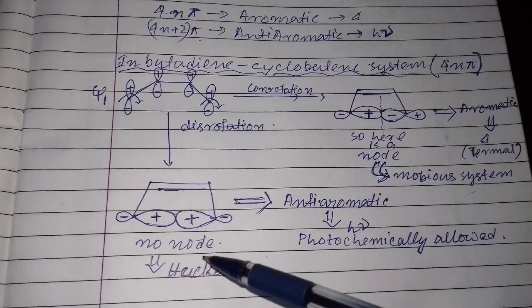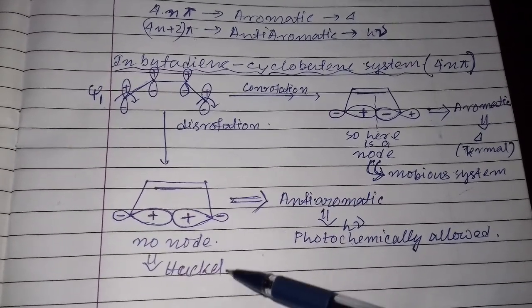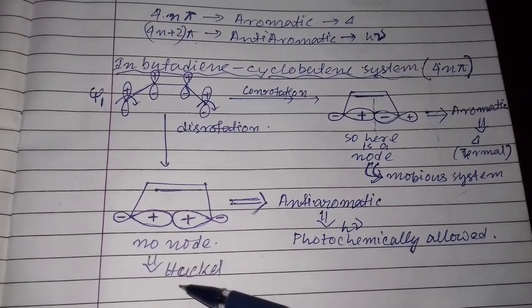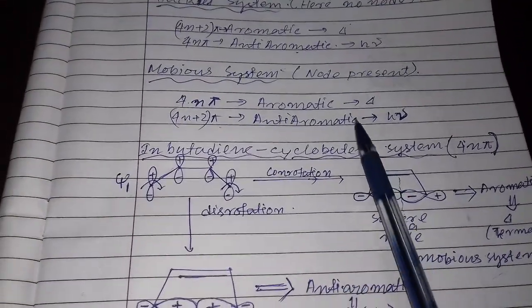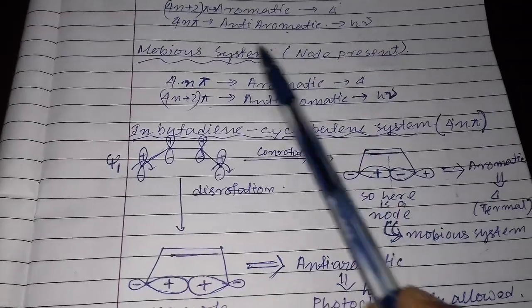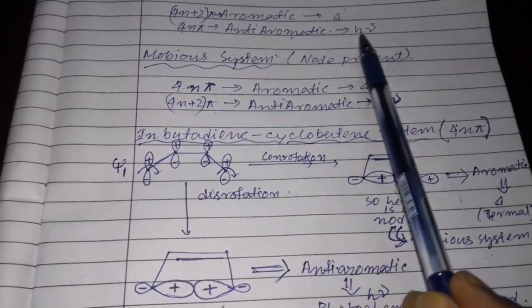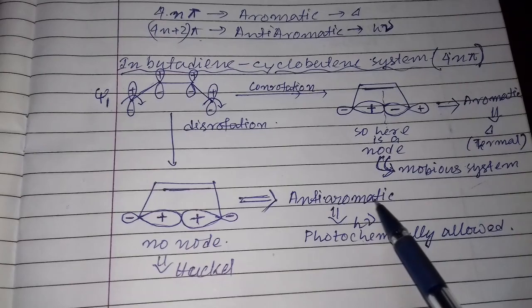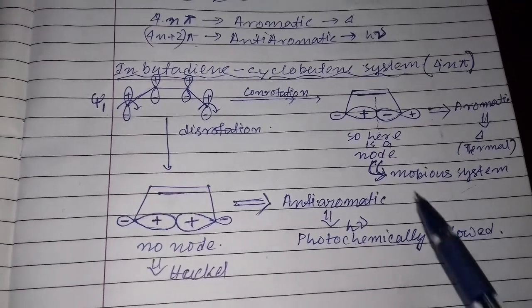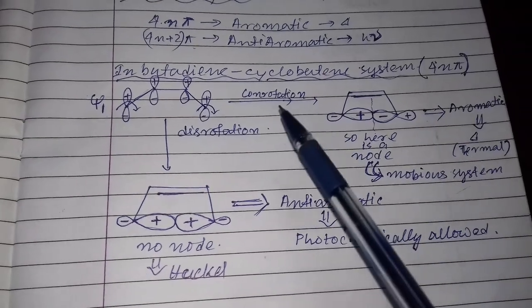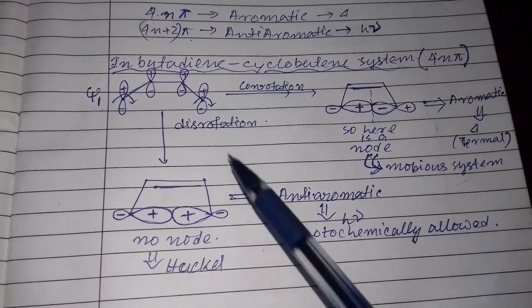Since there is no node, this is a Hückel system. According to the Hückel system, in the 4n pi electronic system it is anti-aromatic and photochemically allowed. So for the 4n pi electronic system, the disrotatory process is photochemically allowed and the conrotatory process is thermally allowed.